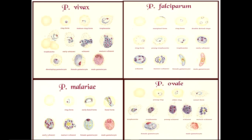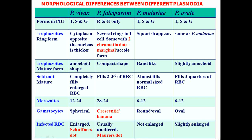The schizont almost fills the normal-sized RBC with 6 to 12 merozoites for both malariae and ovale, whereas the schizont of plasmodium ovale fills three-quarters of the RBC. Gametocytes are round to oval for both malariae and ovale. RBCs are not enlarged in malariae but are slightly enlarged in ovale. An important point: in vivax, malariae, and ovale, all stages — trophozoite, schizont, and gametocyte — can appear in blood, whereas in plasmodium falciparum you would only find the ring or trophozoite stage and the gametocyte stage.